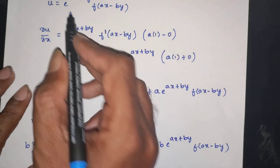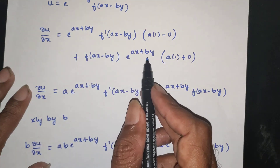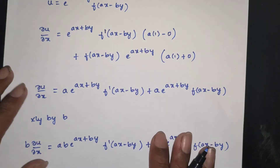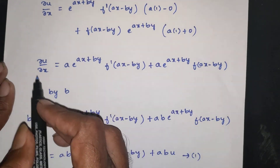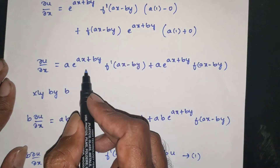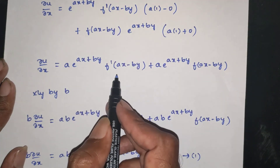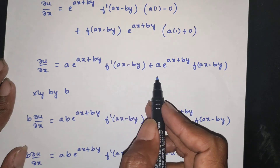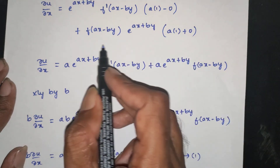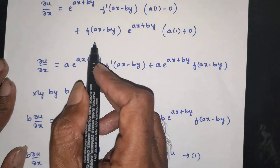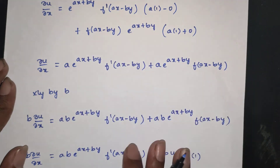ax minus by, e power ax plus by, a into 1 plus 0. So ∂u/∂x is equal to a into e power ax plus by, f dash of ax minus by, plus a into e power ax plus by, f of ax minus by.